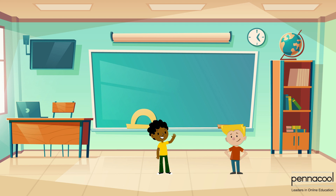Sometimes, measurements are represented in a combination of meters and centimeters. Not all lengths give perfect measurements in meters. For example, Zion's height, according to his parents, is 1 meter 54 centimeters. Elijah challenges him to represent this height in centimeters only.